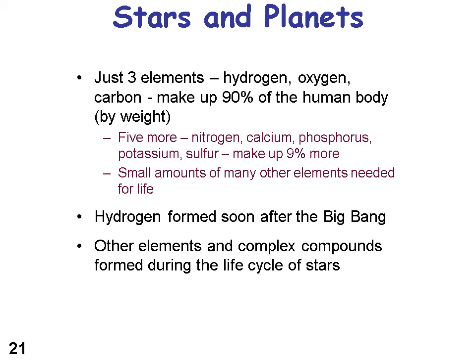Hydrogen was formed soon after the Big Bang — when God first created the universe. The other elements and complex compounds were formed during the life cycle of stars. So if you think about what we're made of, we're made of what was originally made inside stars. God used the forces and systems that cosmologists and astrophysicists study — stars — to make the components of life.